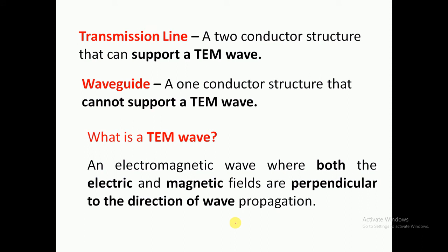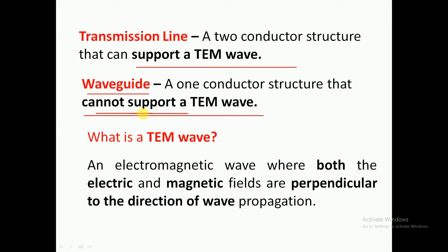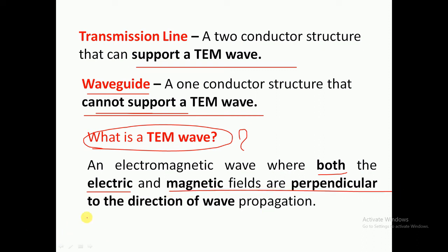Transmission lines support TEM waves — transverse electromagnetic waves — whereas a waveguide does not support TEM waves. So what is a TEM wave? A transverse electromagnetic wave is one where both the electric and magnetic fields are perpendicular to the direction of wave propagation. That is called a TEM wave.